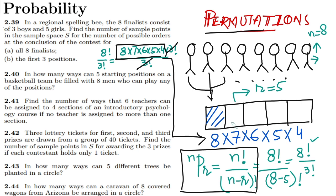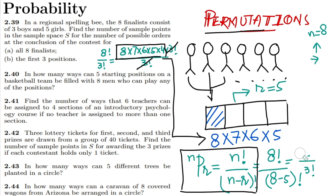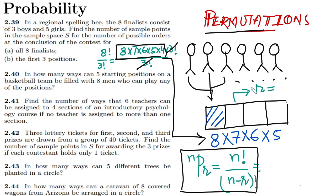Let me now proceed to question 2.41: find the number of ways that six teachers can be assigned to four sections of an introductory psychology course, if no teacher is assigned to more than one section. Again this is the same type of question. Here we have six teachers, so n is reduced to six, and we have four sections, so r equals four.